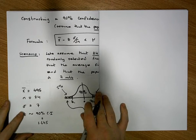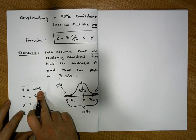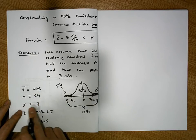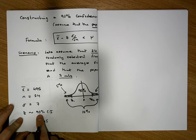Our parameters are x-bar is equal to 495, the sample size is equal to 24, the population standard deviation is 7 mils, and the z-score for 90% confidence interval is 1.645.